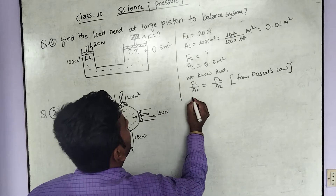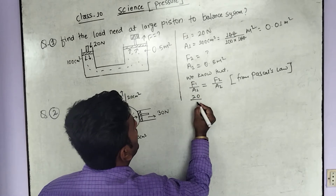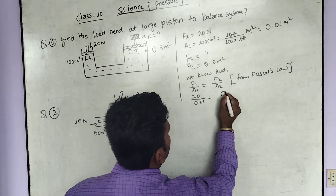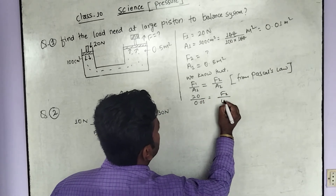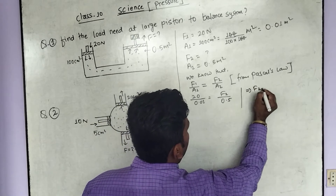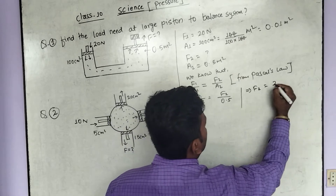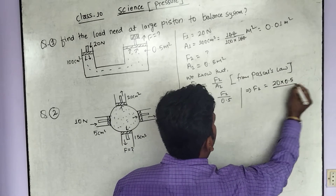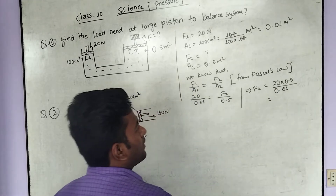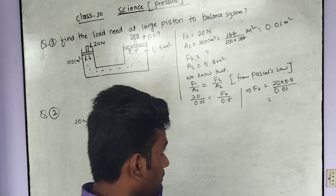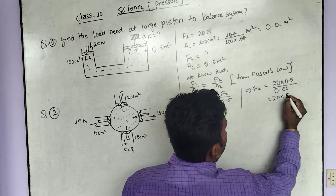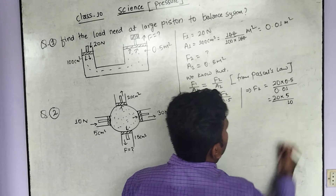So, what is the value of F1? F1 is 20 N. A1 is 0.01 m². This equals F2 divided by A2, which is 0.5 m². So F2 equals 20 multiplied by 0.5 divided by 0.01.